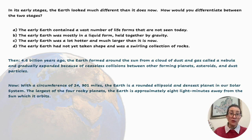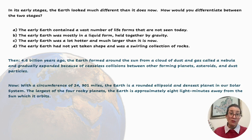Now, the Earth has a circumference of 24,901 miles. The Earth is a rounded ellipsoid and the densest planet in our solar system. The largest of the four rocky planets, the Earth is approximately eight light minutes away from the Sun, which it orbits.